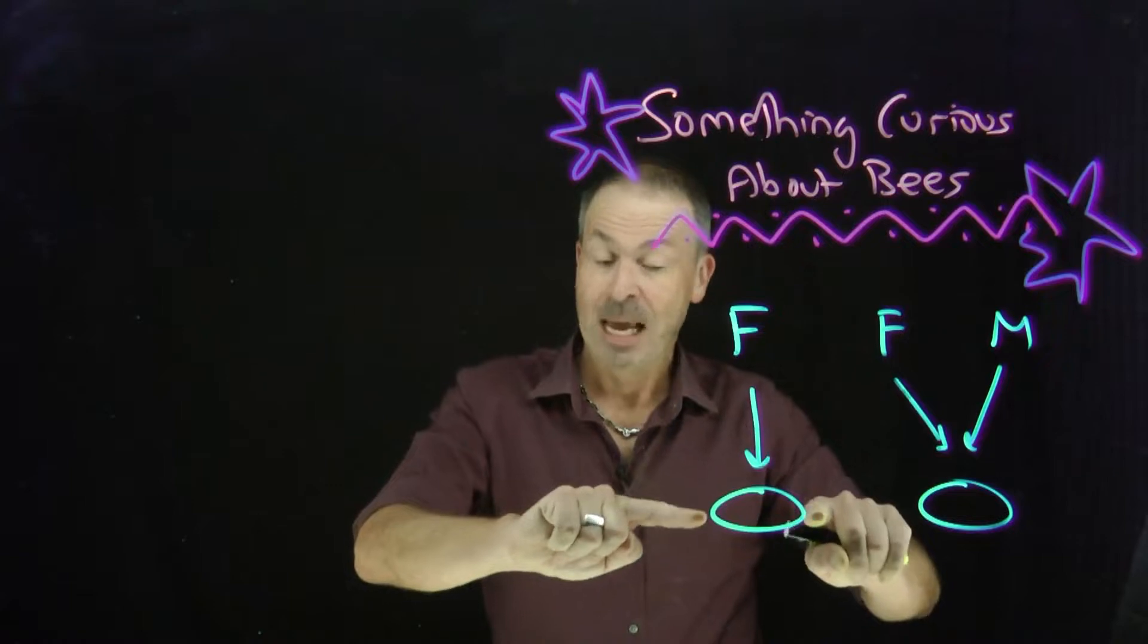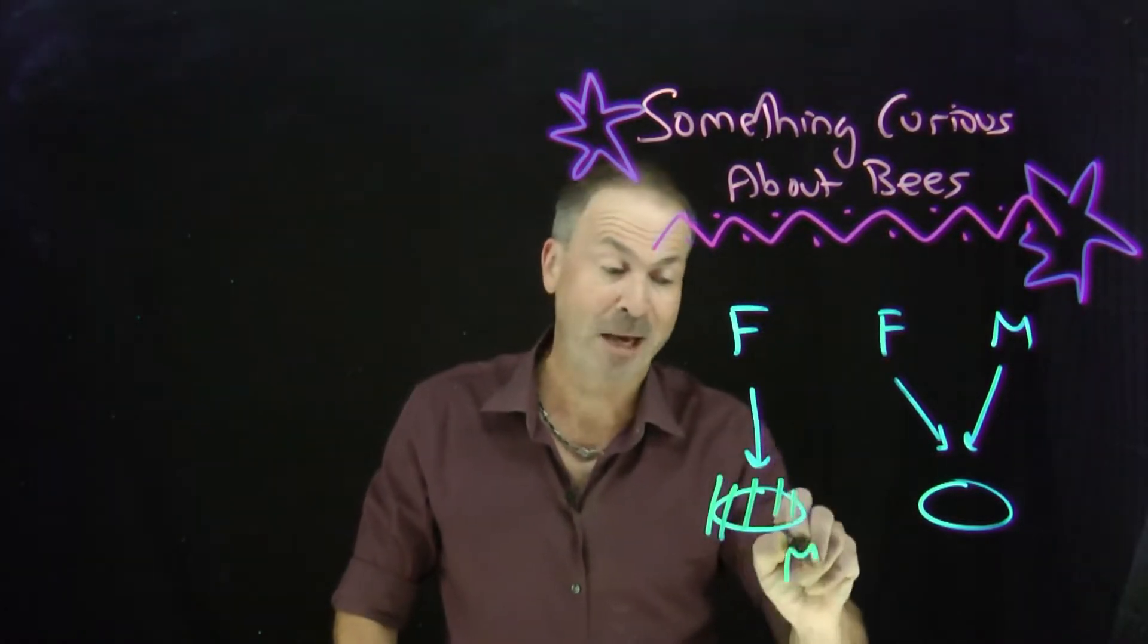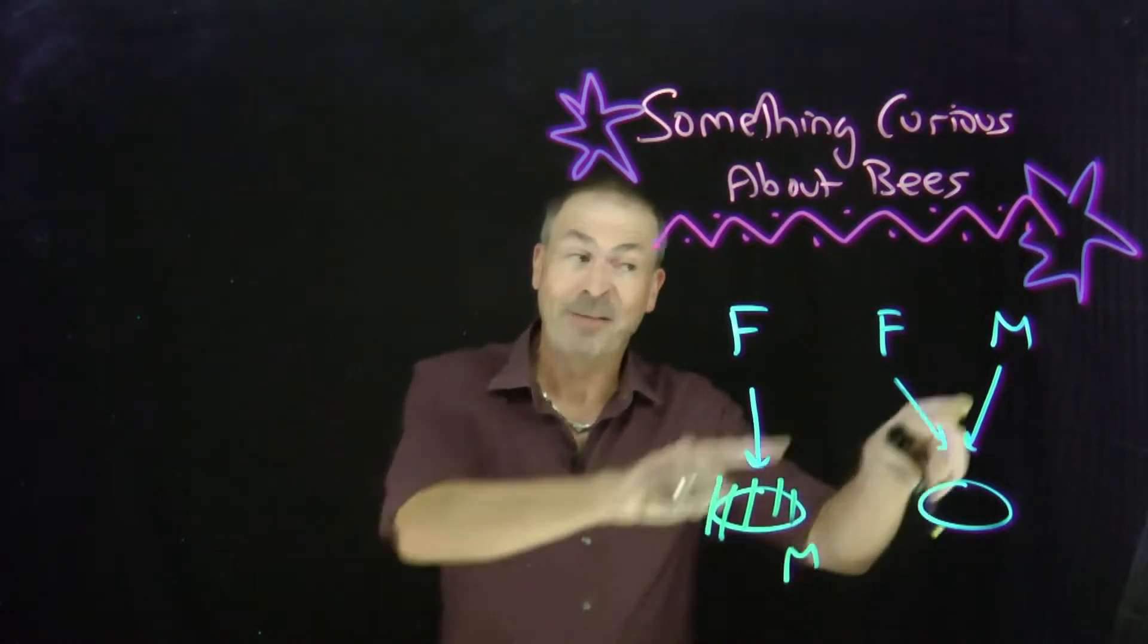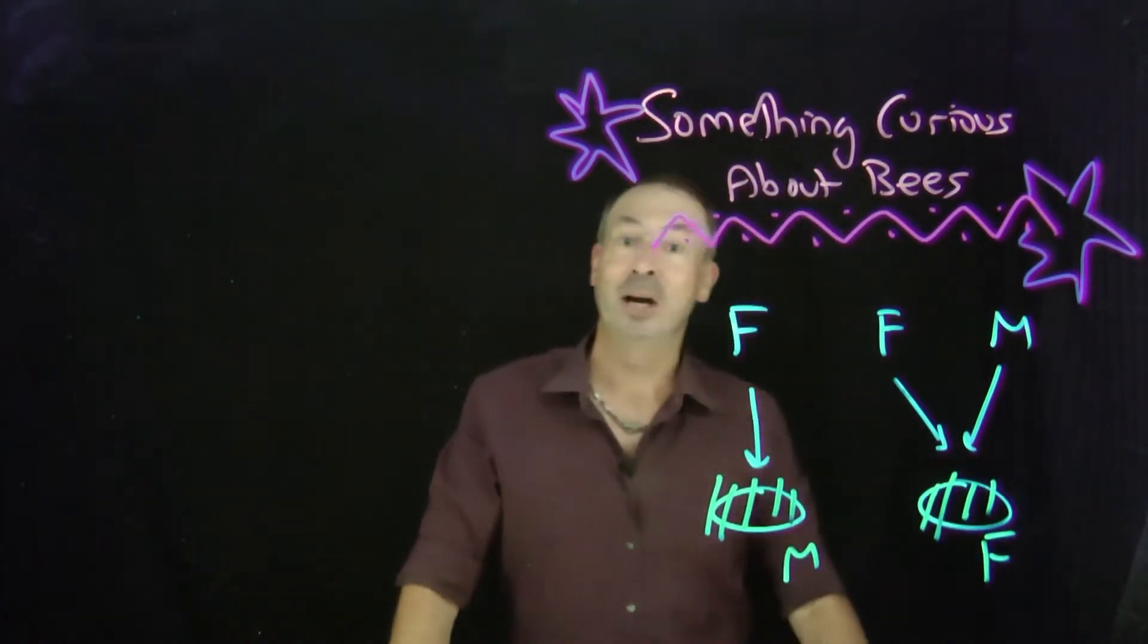Now female bees lay eggs. If an egg is not fertilized by a male, then the egg is actually sure to hatch into a male bee, a drone. Whereas if that egg is fertilized by a male, they're sure to hatch into a female bee, a queen.